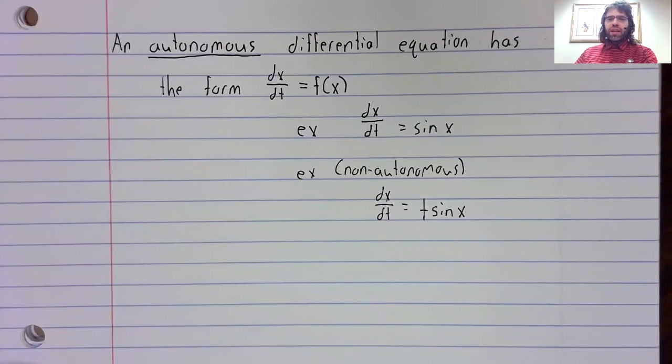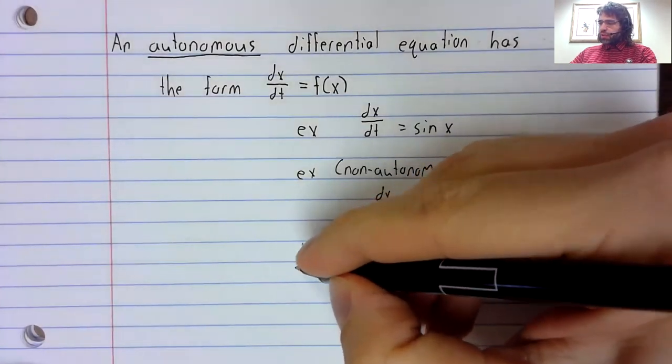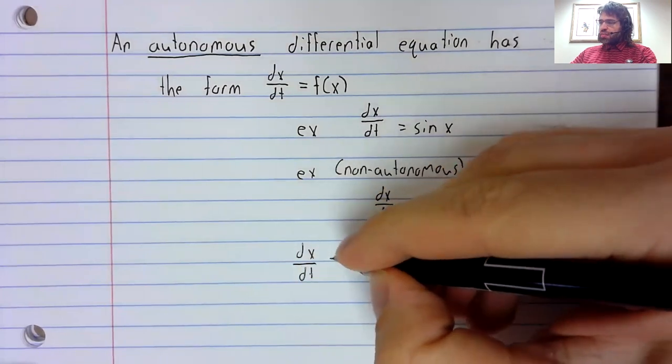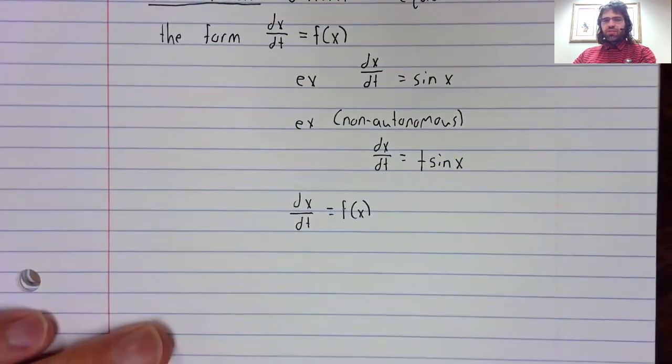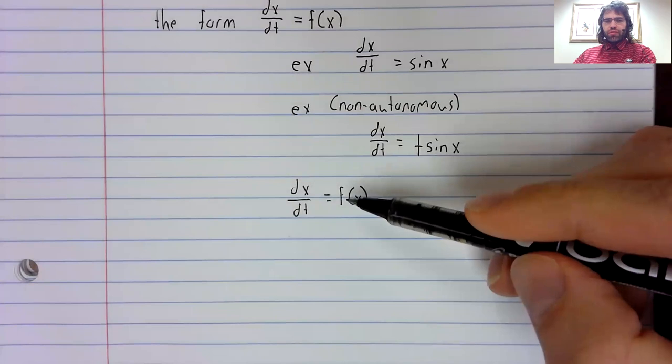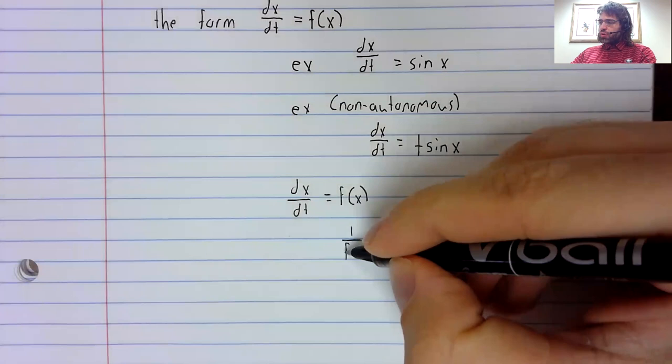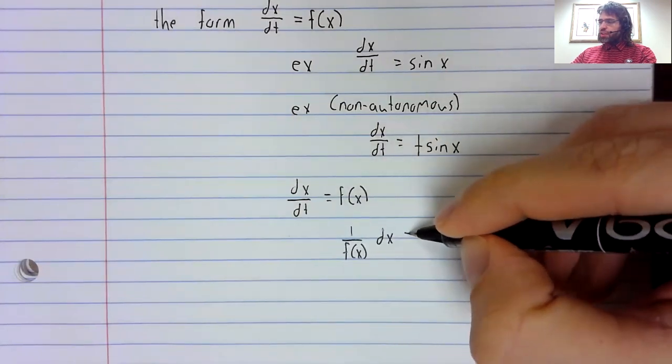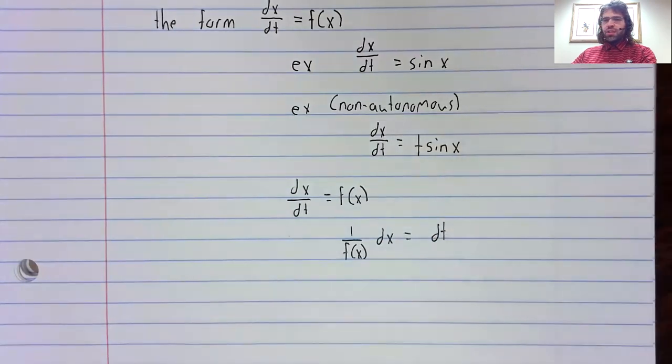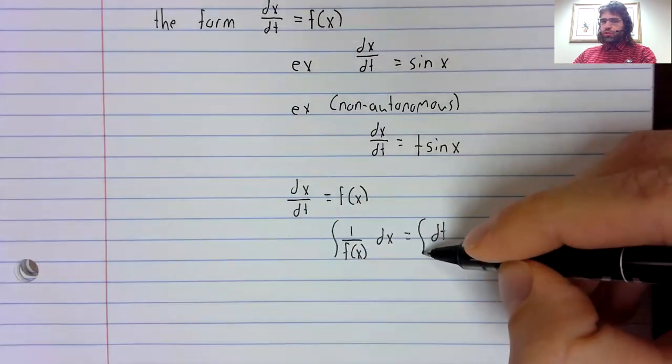And at least in theory, we know how to solve any autonomous differential equation. If we have dx/dt = f(x), this is a separable differential equation. You could write 1/f(x) dx = dt and then try to integrate.